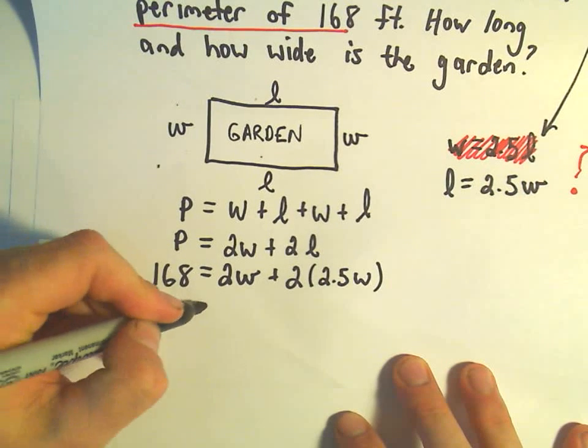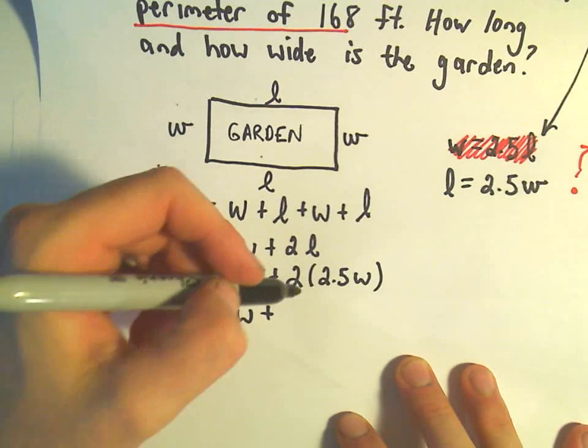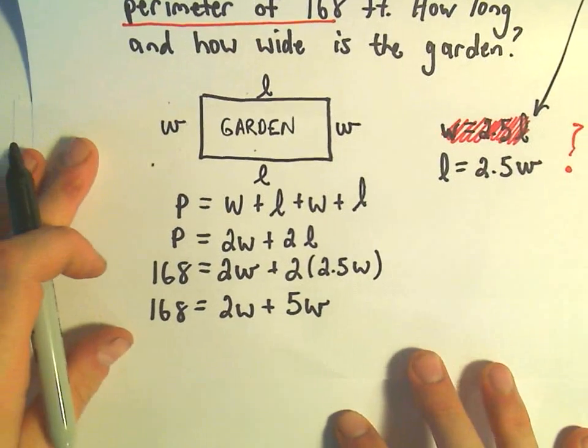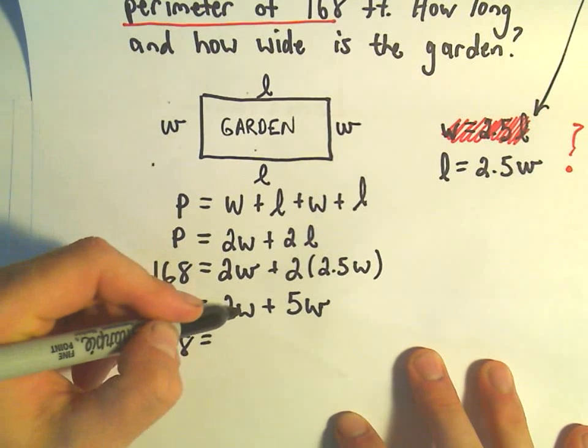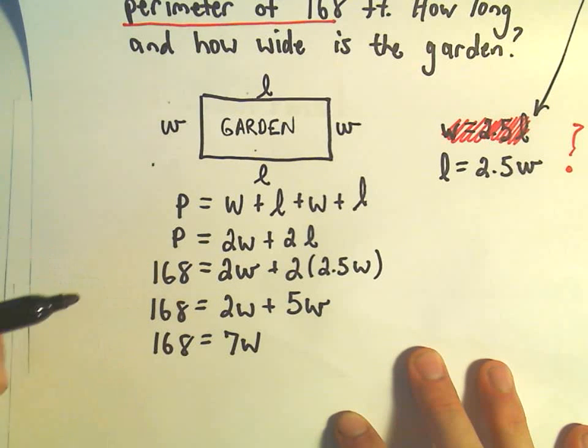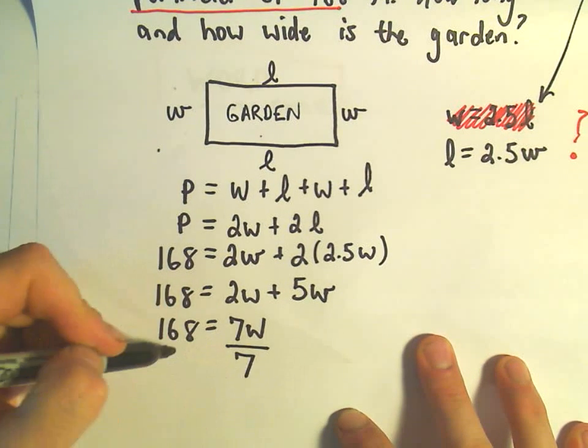So we've got 168, 2W. If we take 2 times 2.5, that will give us 5W. And again, now all I'm going to do is just collect my like terms on the right side. So 2W plus 5W is going to be 7W. And again, I'm trying to solve for W here. So what I'm going to do is just simply divide both sides by 7.